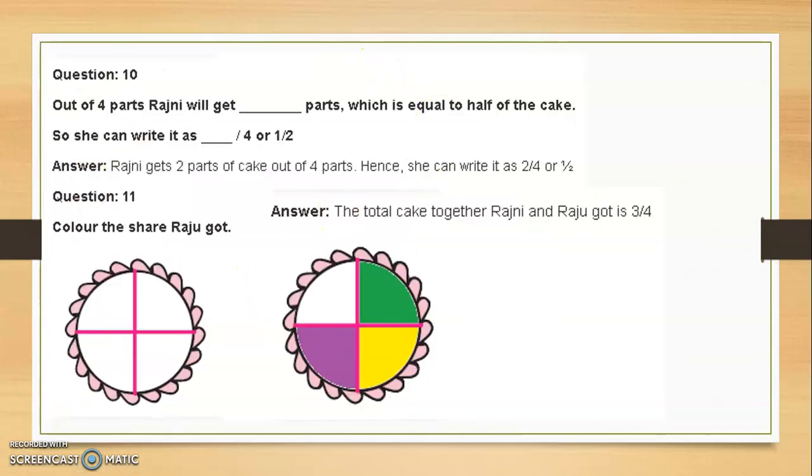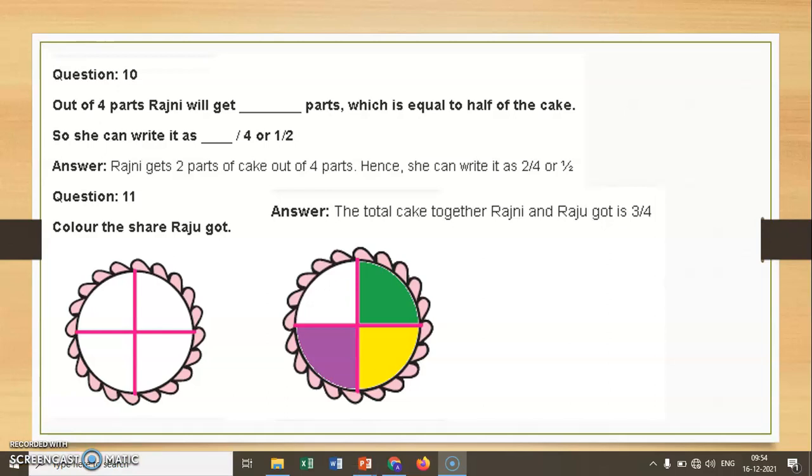Now this part, what we have to do. Color the share that Raju got. Raju got one part, so you will just color one part.